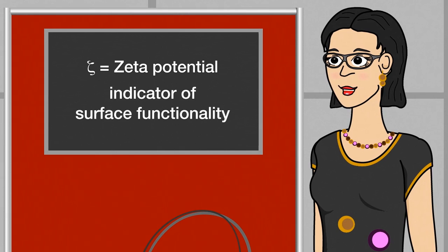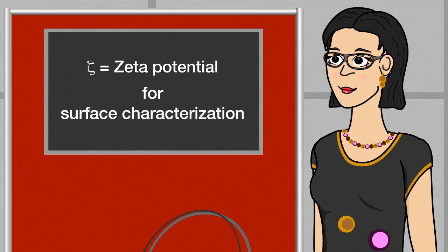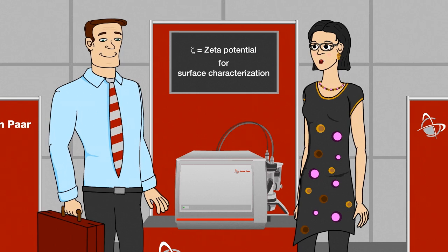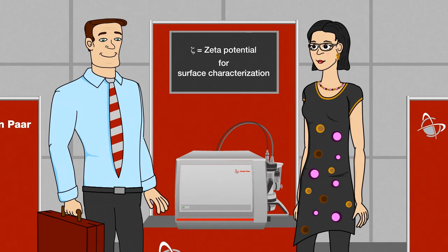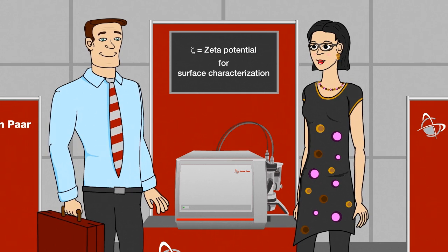Plus the zeta potential also allows you to characterize the surface itself. It gives you the isoelectric point, for example, which quickly tells you if a solid surface is more acidic, basic, neutral or inert. And there's much more.